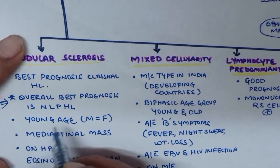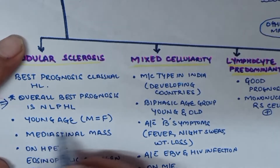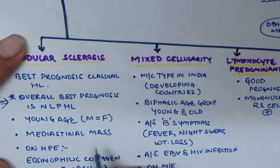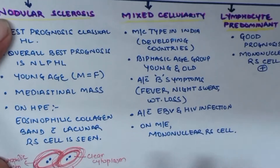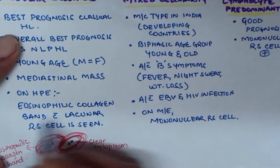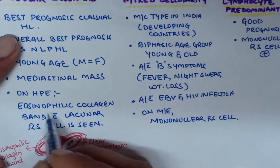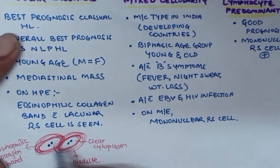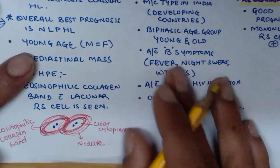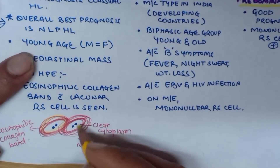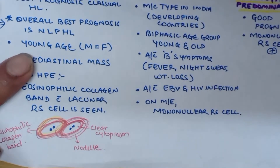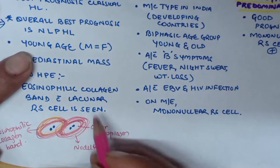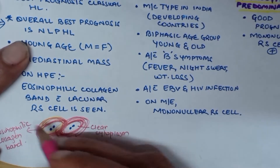Nodular sclerosis is present more in young age, with males and females equally affected. It presents with a mediastinal mass. On histopathological examination, you see eosinophilic collagen bands with clear cytoplasm forming nodules, and lacunar Reed-Sternberg cells are seen.